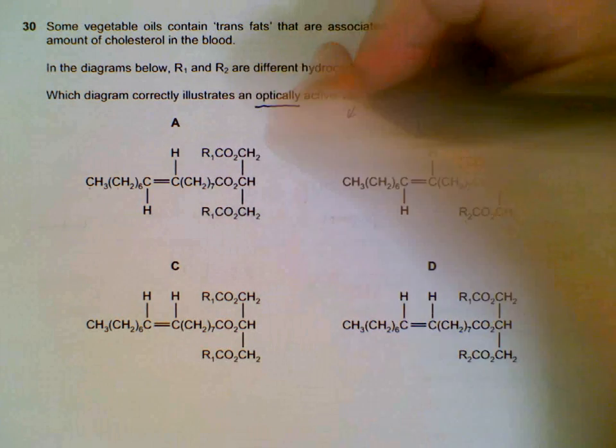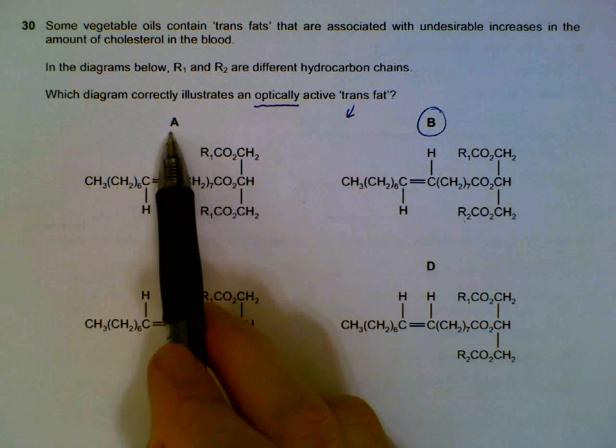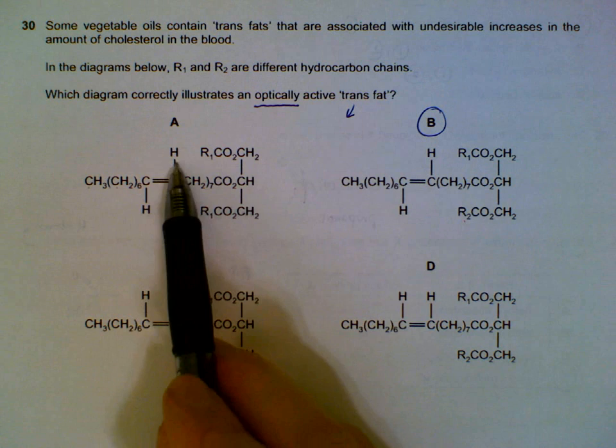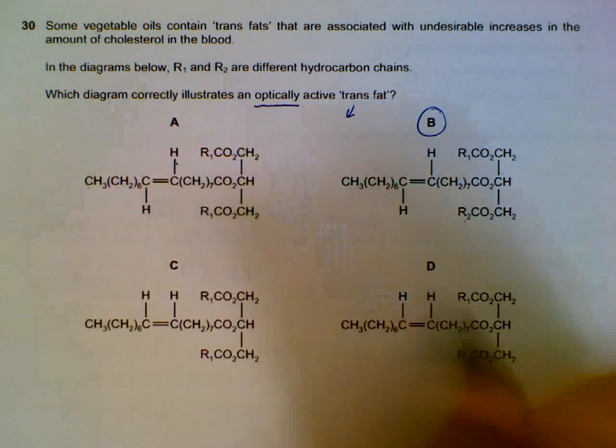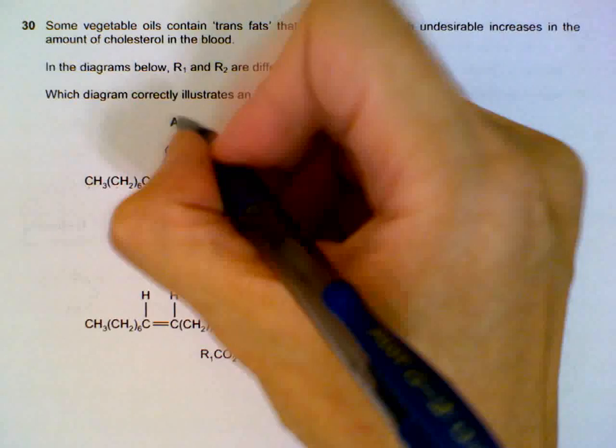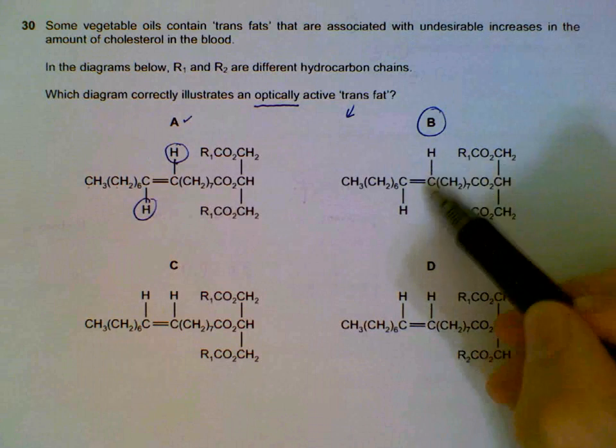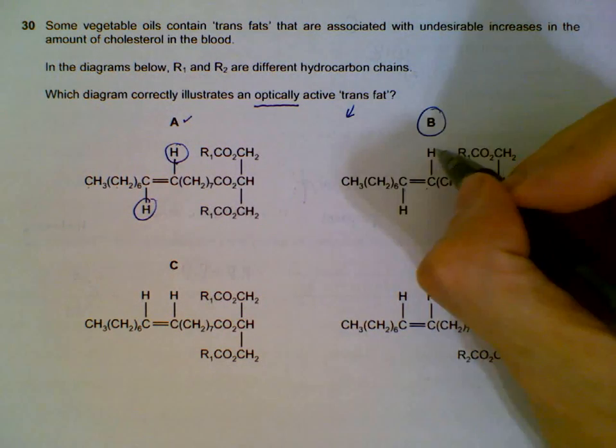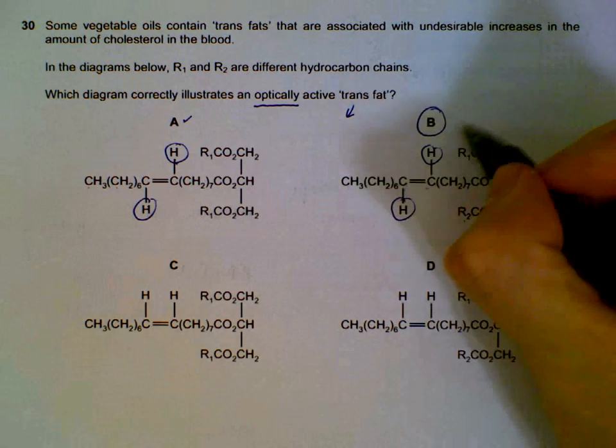Looking at A, using the H as a guide, the hydrogen as a guide, you realize that this is actually a trans isomer, so it is possible. We will leave it aside. B: the double bond here, the hydrogens are on diagonally opposite sides, so it is also a trans isomer, so it is possible.